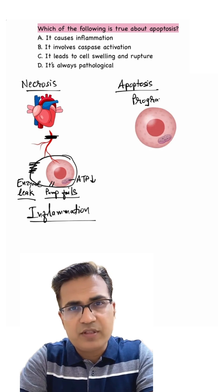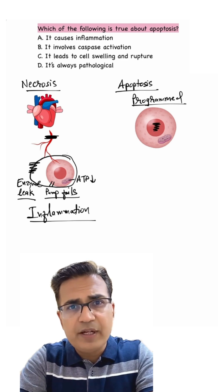Apoptosis is a genetically programmed process. It's triggered by biochemical signals like DNA damage. There are two main biochemical pathways,